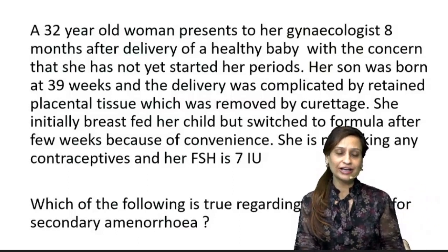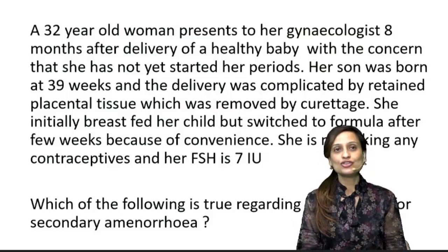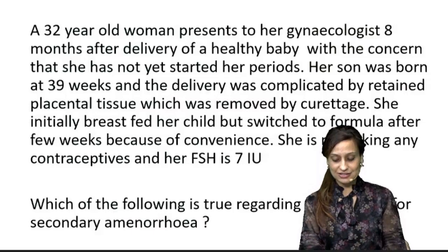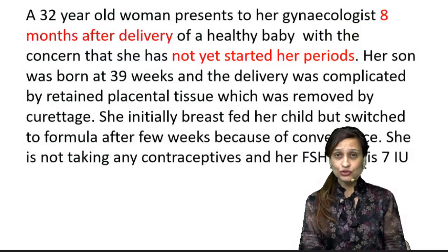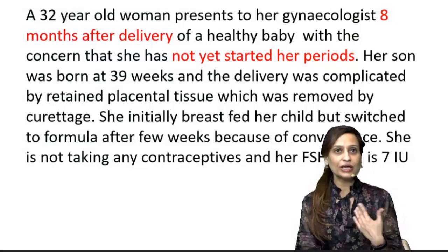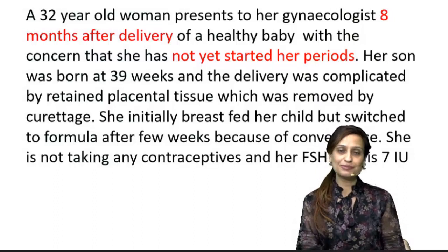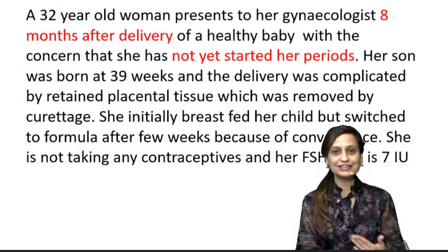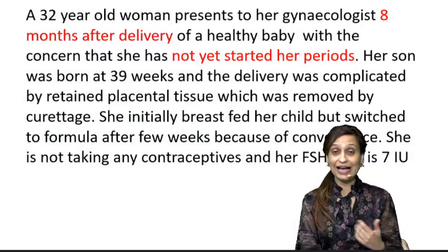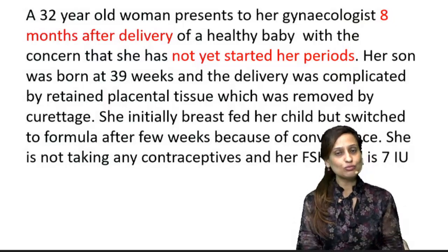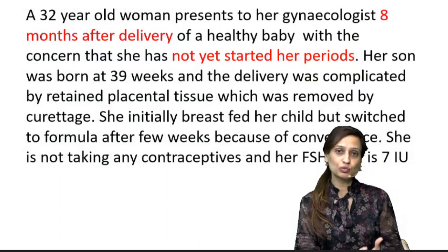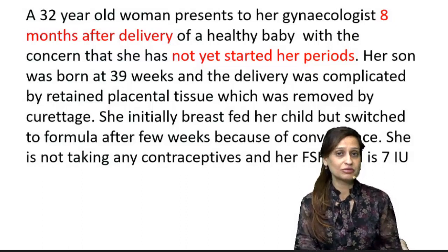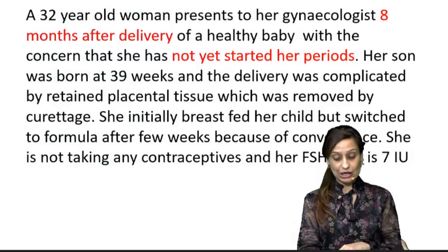The first art is learning how to find the keywords in such MCQs. Let's identify the keywords, then put them together to reach the answer. The first keyword is that the woman is 8 months post-delivery and has not started her periods. Post-delivery, if someone is breastfeeding, they may not menstruate until they stop. But if the woman stops breastfeeding — as happened in this case — they should usually begin to menstruate within 3 months. So we are dealing with a case of secondary amenorrhea: she has not started her menses despite no longer breastfeeding.